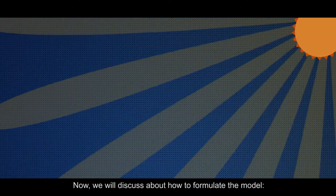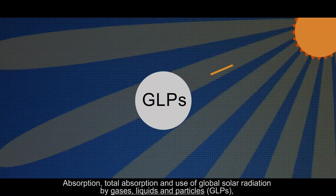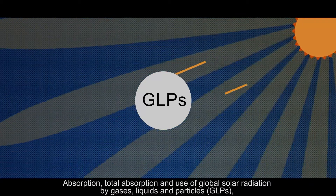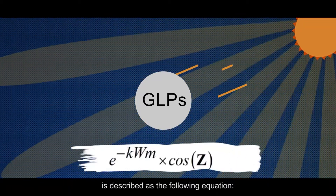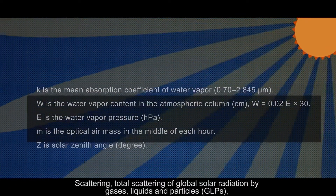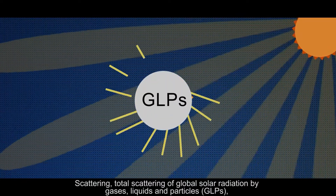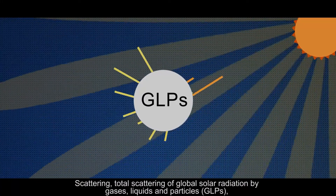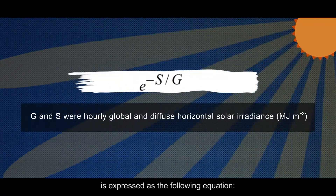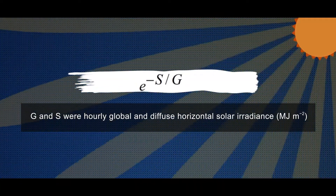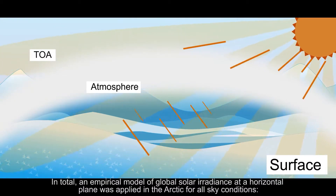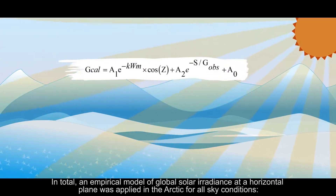Now we will discuss how to formulate the model. Absorption — total absorption of global solar radiation by gases, liquids and particles — is described by the following equation. Scattering — total scattering of global solar radiation by gases, liquids and particles — is expressed by the following equation. In total, an empirical model of global solar irradiance at a horizontal plane was applied in the Arctic for all sky conditions.